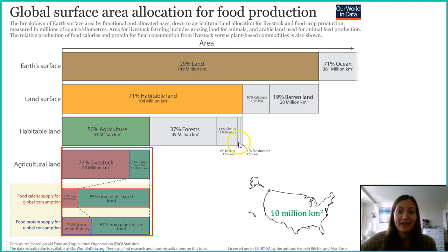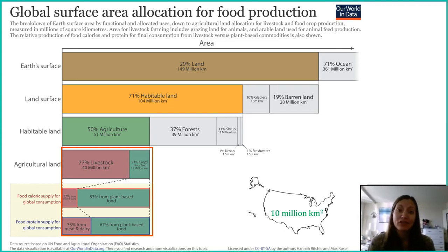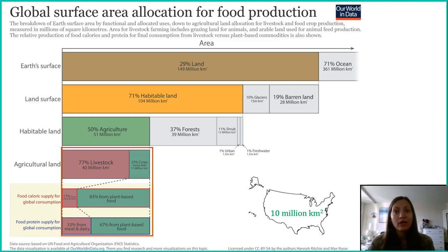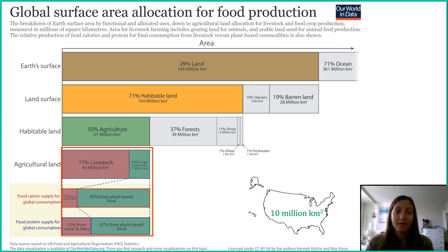Half of habitable land is agriculture, and only 1% of all the land we can live on is urban land — like where we live here in Montgomery County. Of this agricultural land, 77% — a majority — is being used for livestock. This is either animals like pigs, cows, and chickens roaming on open land, or cropland used exclusively for livestock feed. Only 23% of agricultural land is actually going towards crops that you and I consume.